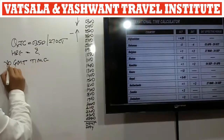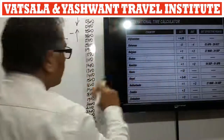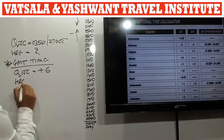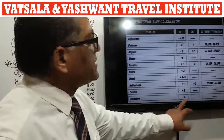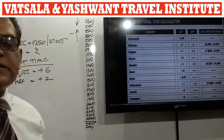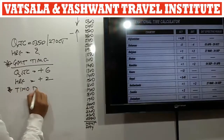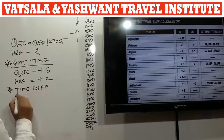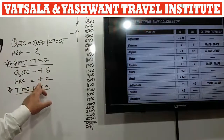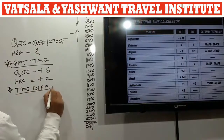Next step: find out the time difference. Here both cities have a plus sign. The formula says when both cities are plus, always minus them. So the time difference will be plus 6 minus plus 2, which equals 4 hours.